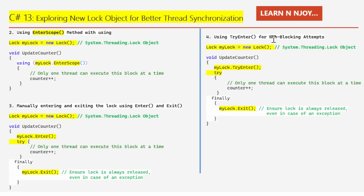Number four: using TryEnter for non-blocking attempts. The TryEnter method allows us to attempt entering the lock without waiting indefinitely if another thread already holds it. This is useful when we don't want a thread to wait forever. Create the lock instance: lock myLock = new Lock(). Inside UpdateCounter, call myLock.TryEnter() inside a try/finally block — in the critical section, increment counter, and in the finally block call myLock.Exit() to ensure the lock is always released even if an exception occurs.